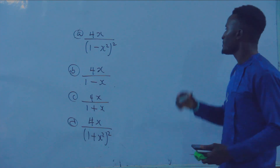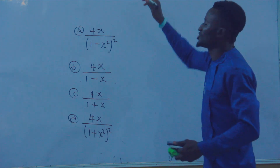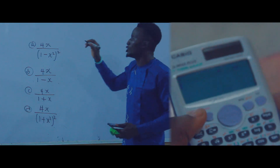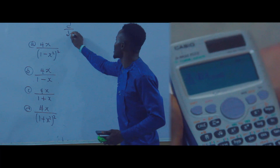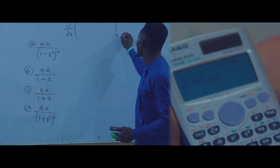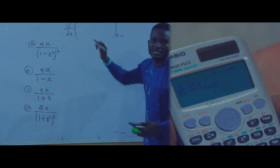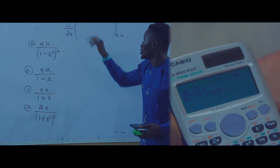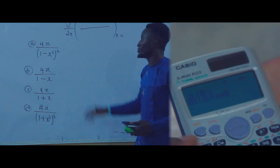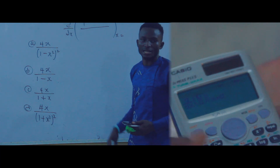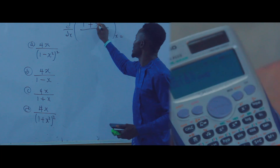To solve this on your calculator, press SHIFT and the button under alpha — it will give you d/dx. When you have the cursor inside, press the fraction button, then press 1 at the numerator, then press plus.